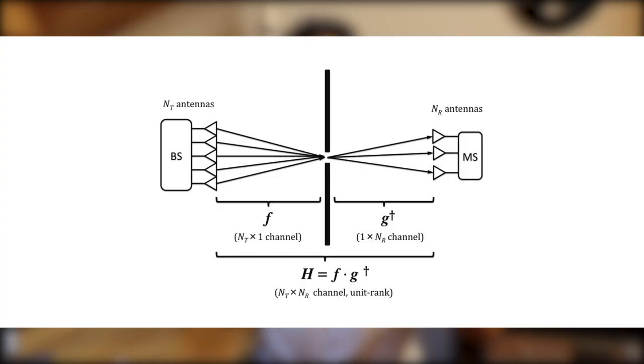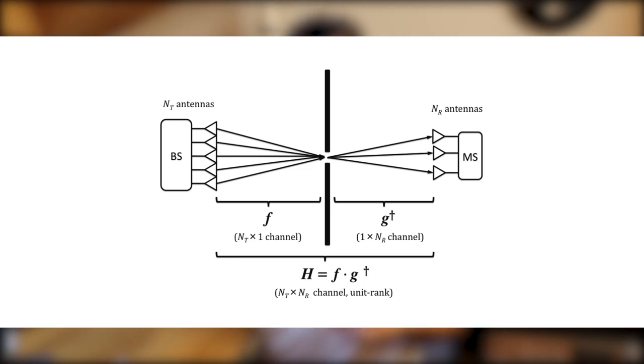All these decoders have some problems in the rank-deficient or overloaded scenario. This situation can happen if the antenna elements are too close to each other, or if we have the so-called keyhole effect. The keyhole effect is when we have a big obstacle with a small hole, and all radio waves have to cross this hole, causing them to collide and overlap. At the receiver side, it is very difficult to demodulate in this case. In general, all decoders based on inverting the H matrix are not suitable for this situation.